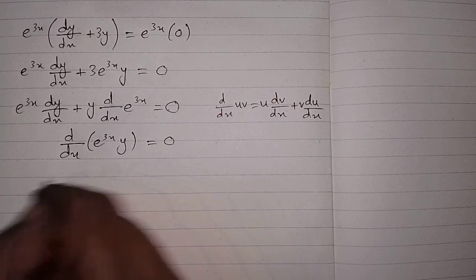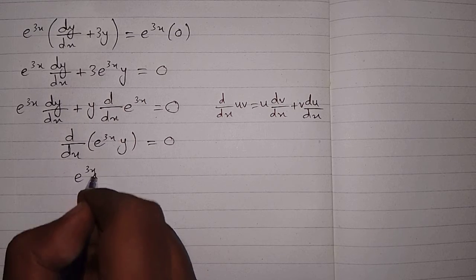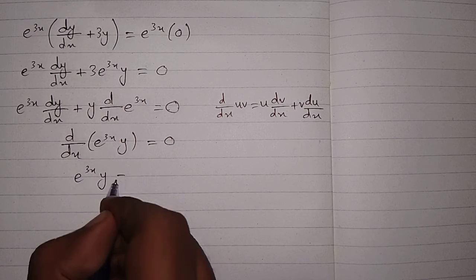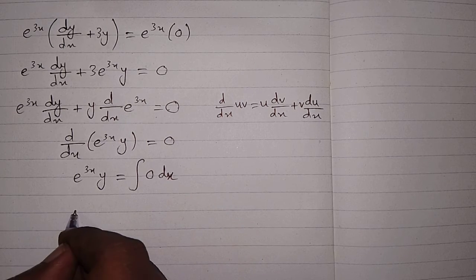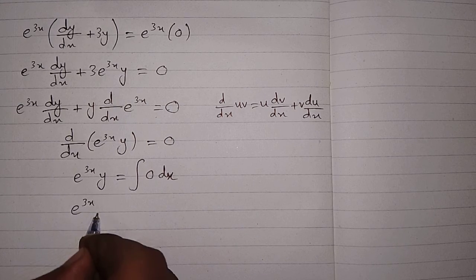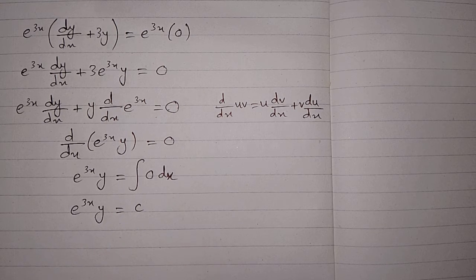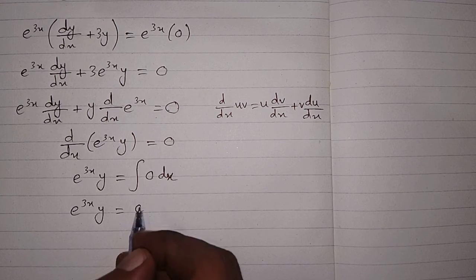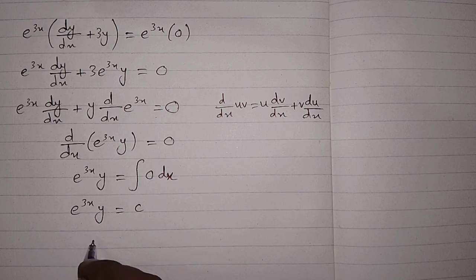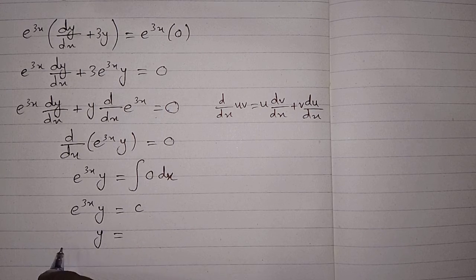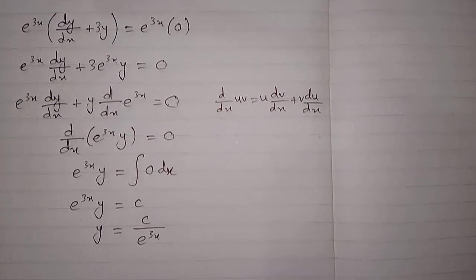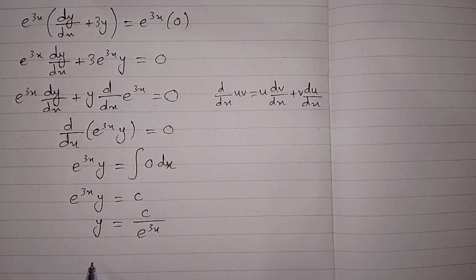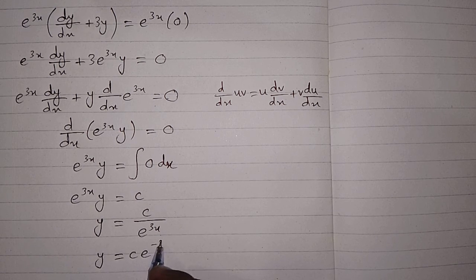Now we can integrate both sides with respect to x, so we have e to the power 3x multiplied by y is equal to the integral of 0 dx. The integral of 0 is a constant, because the derivative of a constant is 0. So this gives us y equals c divided by e to the power 3x, which is the required solution. This can also be written as y equals c times e to the power minus 3x.